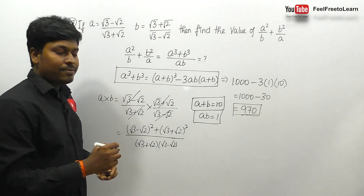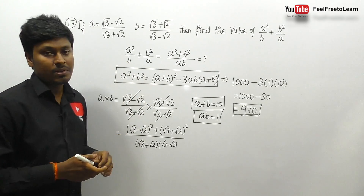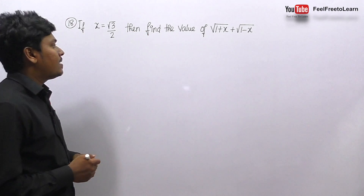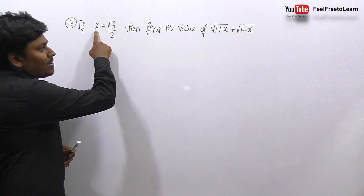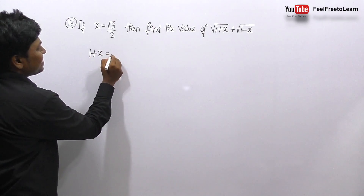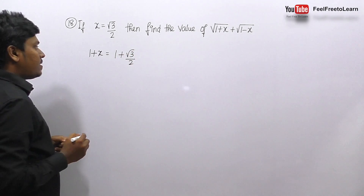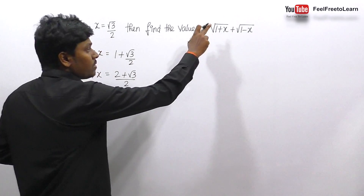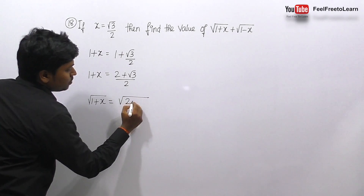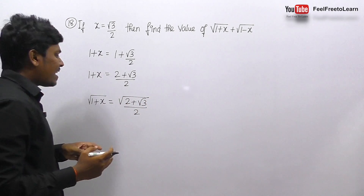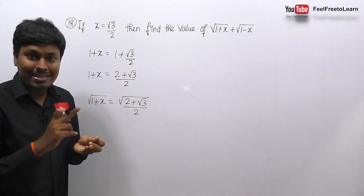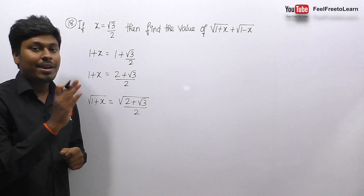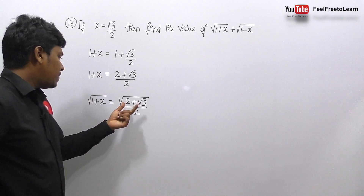Always remember: to crack algebra questions you must know all the formulas. Question number 18: if x = √3/2, find √(1+x) + √(1-x). First, 1+x = 1 + √3/2 = (2+√3)/2. So √(1+x) = √[(2+√3)/2]. The key concept is to convert this into the form (a+b)².